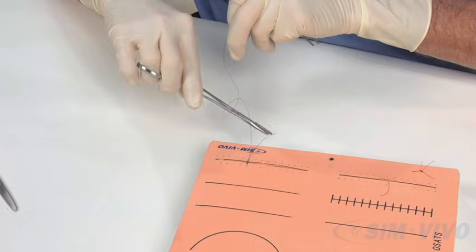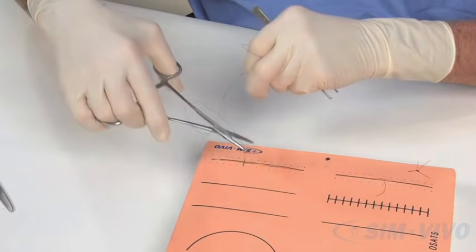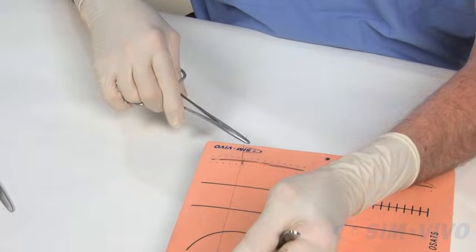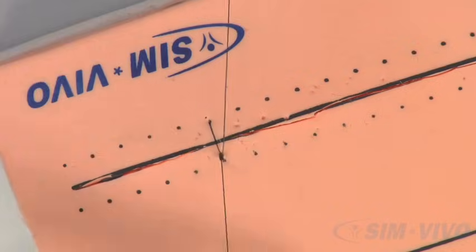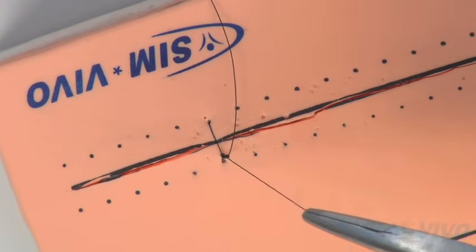Start away, continue towards. Start towards, continue away, and one more. In this case, you want to cut off the short end, leaving a tag of about 5 mm.